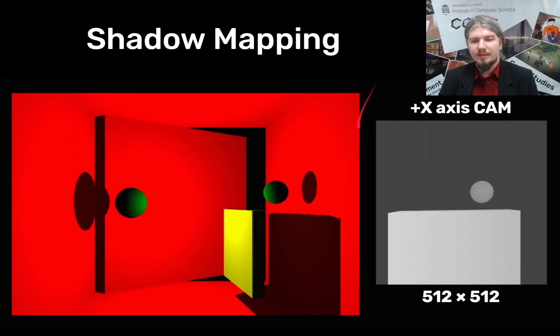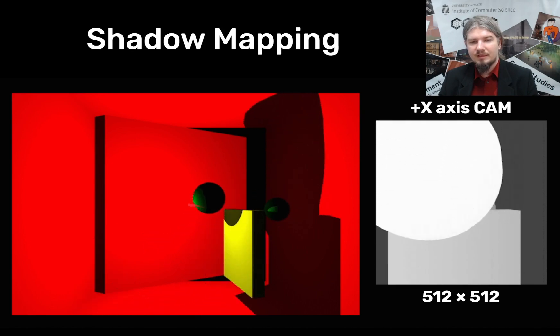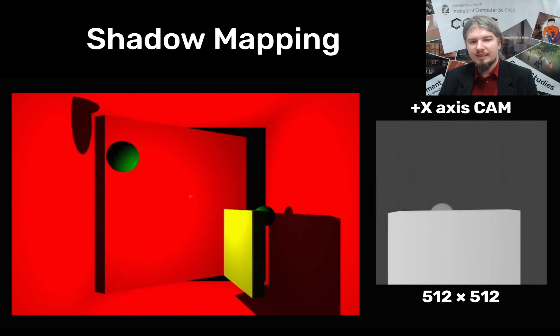So here is an example of shadow mapping. On the left you can see couple of objects moving around in the scene. I have a light source exactly in the middle of the scene and you can see shadows forming on this environment.